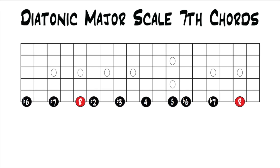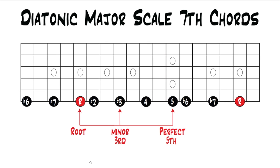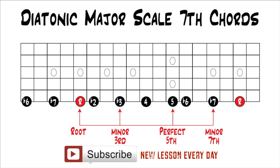Now we rearrange the intervals again so the third note of the major scale becomes our new root. That gives us root, flat 2, flat 3, 4, 5, flat 6, flat 7. Building a triad off that gives a minor triad. If we stack another 3rd to get to our 7th, we end up with a flat 7, or minor 7th. So our new chord is root, minor 3rd, perfect 5th, minor 7th — a minor 7th chord. Building a 7th chord off the third note of the major scale gives you a minor 7th chord.